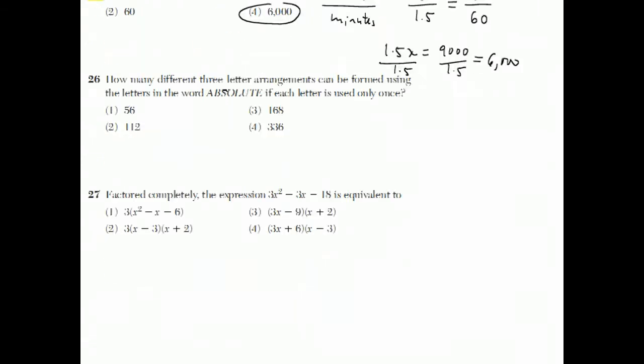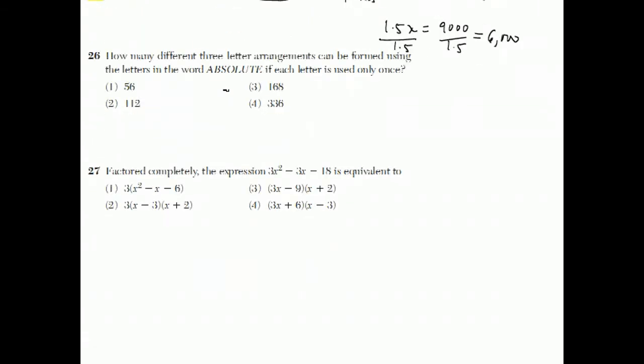Question number 26. How many different three-letter arrangements can be formed using the letters in the word absolute if each letter is used only once? Well, absolute has 1, 2, 3, 4, 5, 6, 7, 8 different letters. And the quick way to do this question, one of these came up earlier. There's 8 different letters that can be chosen for the first letter of this three-letter arrangement.